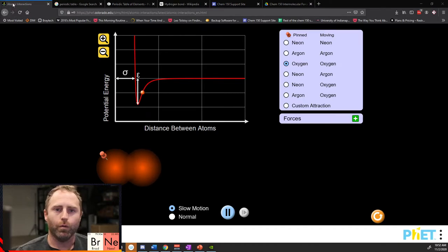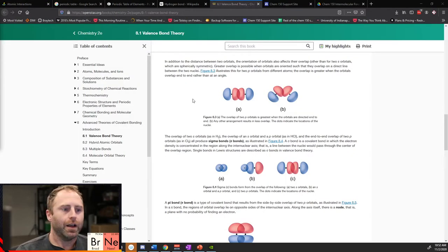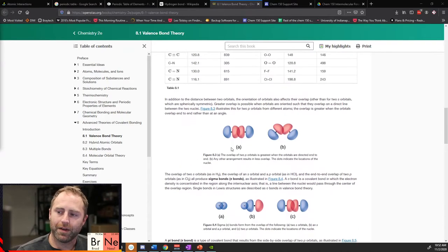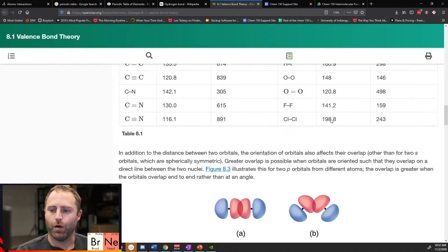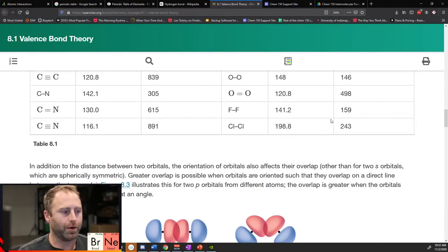I'm going to bring over the textbook itself because I think that they do a fantastic job of showing you all what the various overlaps of atomic orbitals are.